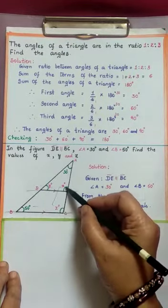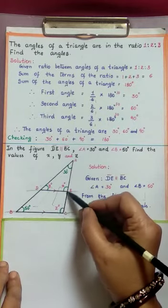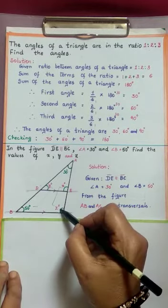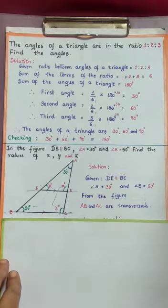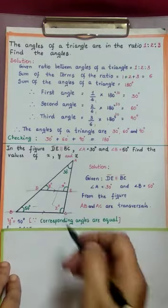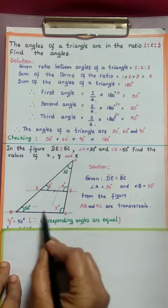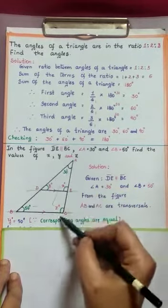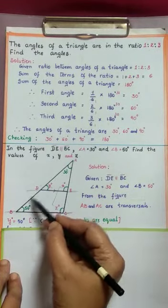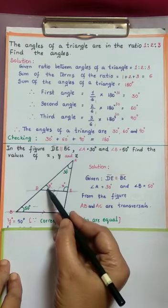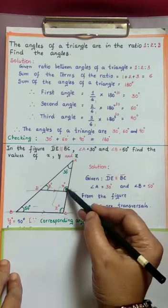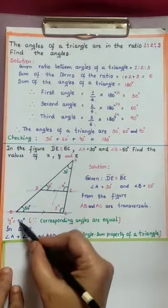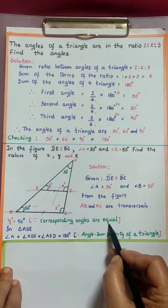Similarly, X is exterior and Z is interior for transversal AC. So X degrees and Z degrees are corresponding angles made by the transversal, and therefore equal. DE and BC are parallel lines; AB and AC are transversals because they intersect DE and BC at two distinct points. So these two are corresponding angles, and this is another pair of corresponding angles. Therefore Y degrees is 50 degrees, since corresponding angles are equal.